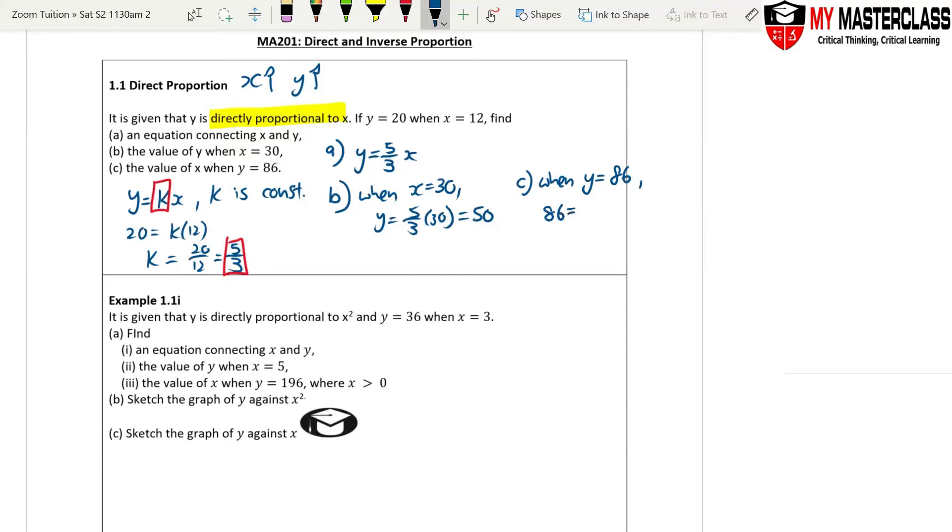86 equals 5 over 3x. x equals 86 divided by 5 over 3, and then you get your answer, which is 51 3/5.